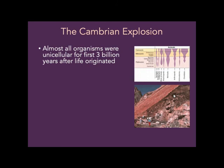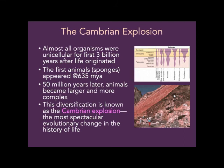The Cambrian explosion: almost all organisms on Earth were unicellular for the first 3 billion years after life originated. First we start to see sponges around 635 million years ago, but then 50 million years later, animals suddenly became larger, more complex, and very diverse. This diversification is known as the Cambrian explosion — you go from very few species of animals to lots of species of animals very rapidly.